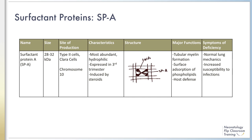In addition, surfactant protein A enhances phospholipid uptake and inhibits phospholipid secretion. It plays a major role in host defense by contributing to agglutination, opsonization, decreasing viral activity, and modulation of inflammation.